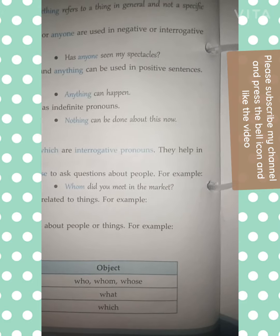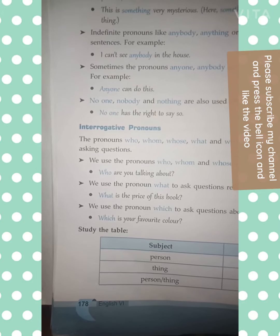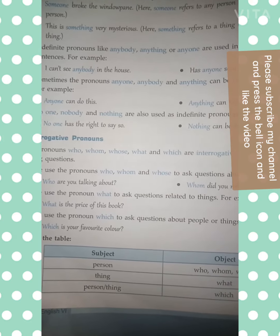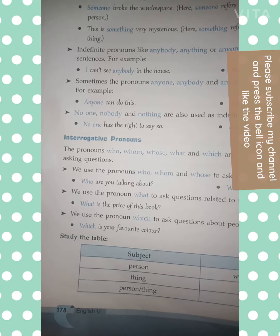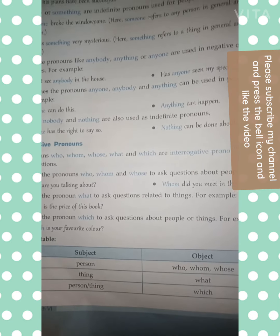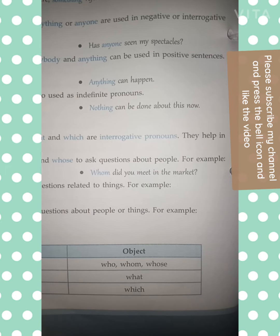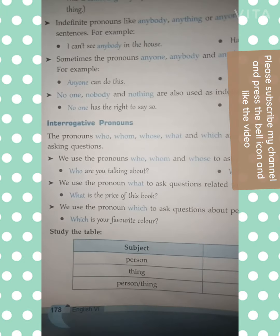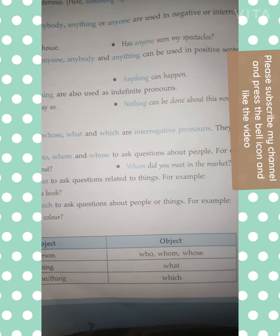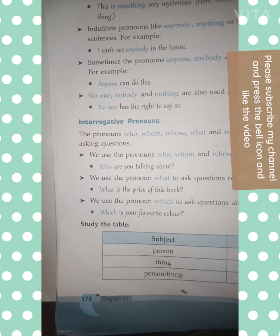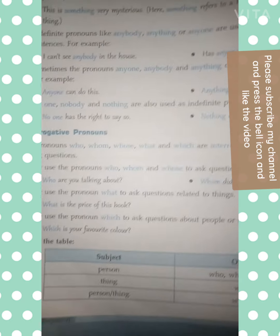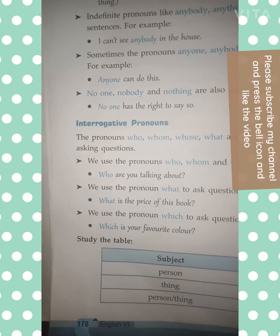No one, nobody, and nothing are called indefinite pronouns. For example: 'No one has the right to say so.' 'Nothing can be done about this now.' The pronouns who, whom, whose, what, and which are interrogative pronouns — they help in asking questions. We use 'who,' 'whom,' and 'whose' to ask questions about people. For example: 'Who are you talking about?' 'Whom did you meet in the market?' We use 'what' to ask questions related to things — for example: 'What is the price of this book?' We use 'which' to ask questions about people or things — for example: 'Which is your favorite color?'